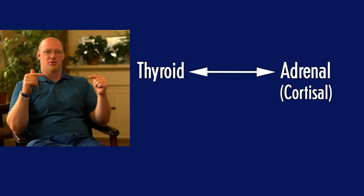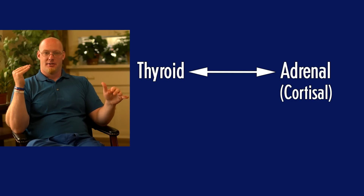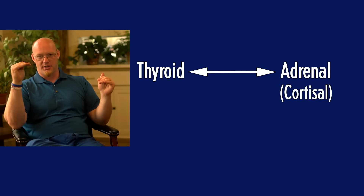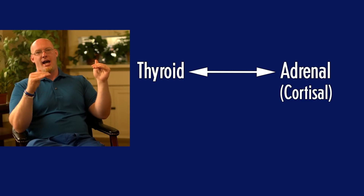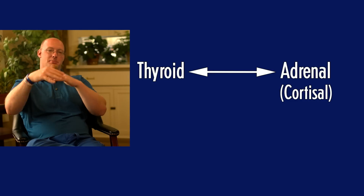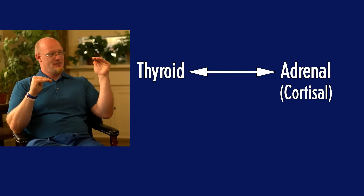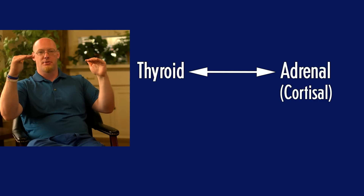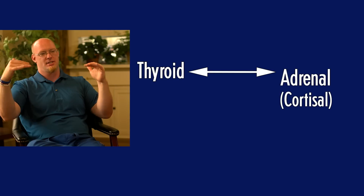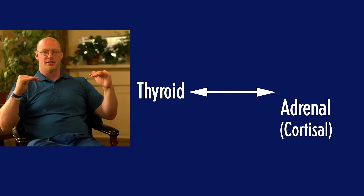The thyroid and adrenals cannot be separated in any treatment model trying to correct metabolism. The thyroid produces hormones that activate the cells in the adrenal glands, so you can't have healthy adrenals without a healthy thyroid. But the adrenal glands govern how fast the thyroid can rev up the metabolism. The adrenals will slow everything down if they can't keep up with the stress of a vigorous metabolism. They rise and fall together.